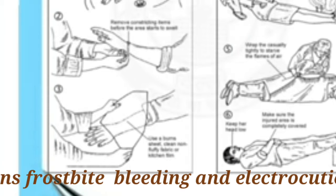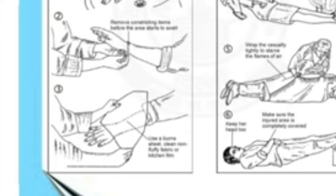Firstly, we will understand what is a burn. A burn is damage to the skin caused by contact with dry heat. It may be caused by fire, flames, steam, hot liquid, hot matter, sunlight, electricity, or chemicals.